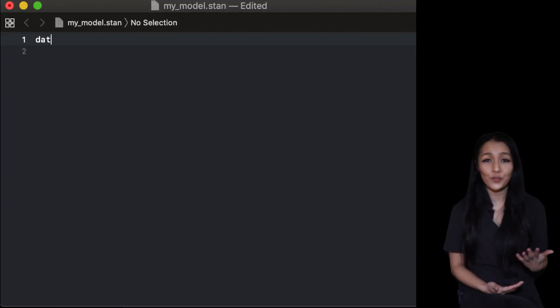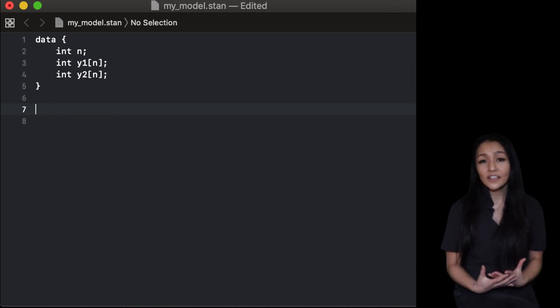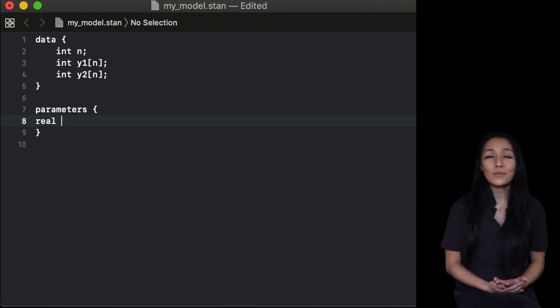Stan has three main blocks. In the data block, we need to declare our data. These are integer arrays of size n, and we also need to declare the integer n, and this is the number of impressions.